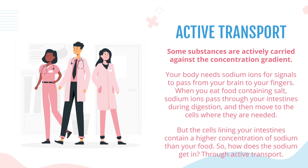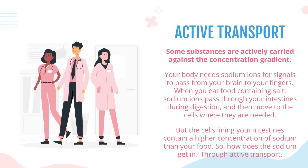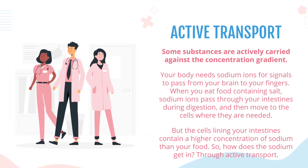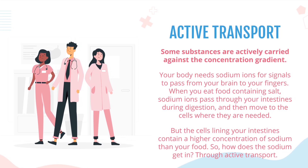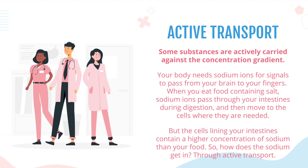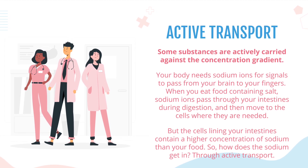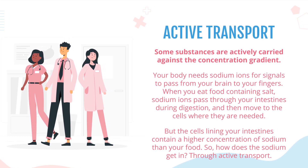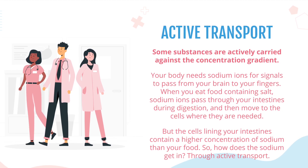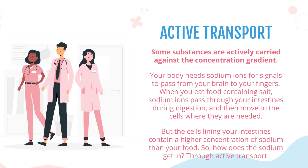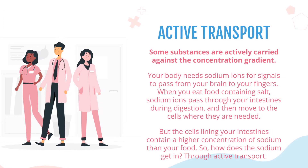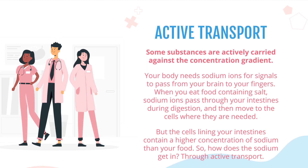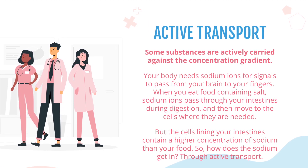Active Transport: some substances are actively carried against the concentration gradient. Your body needs sodium ions for signals to pass from your brain to your fingers. When you eat food containing salt, sodium ions pass through your intestines during digestion and then move to the cells where they are needed. But the cells lining your intestines contain a higher concentration of sodium than your food. So how does the sodium get in? Through active transport.